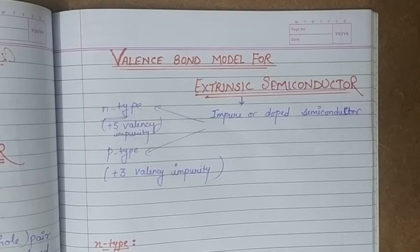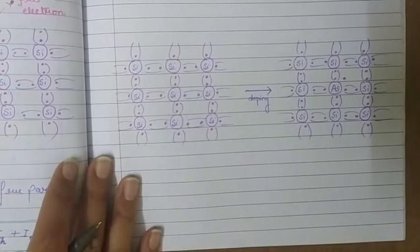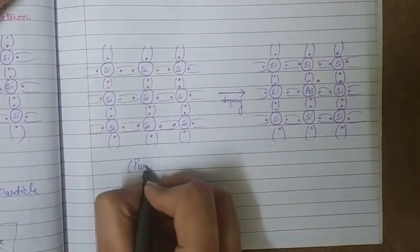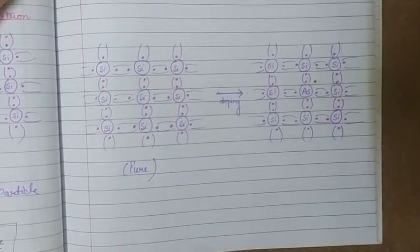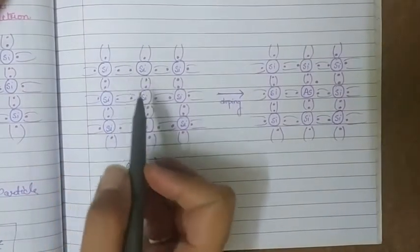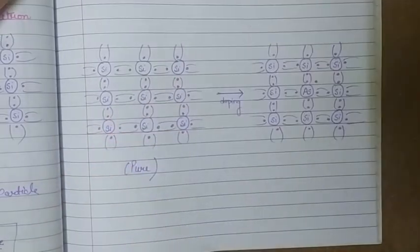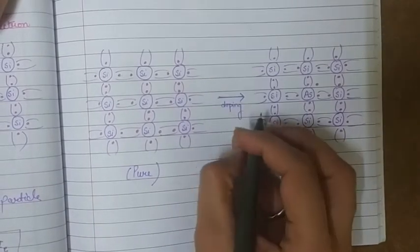Now we are going to discuss the valence bond model for extrinsic semiconductors. First, we will discuss the valence bond model for n-type. If you take the structure of pure silicon or pure germanium — that means a pure or intrinsic semiconductor — every silicon or germanium atom has four valence electrons which get shared with the nearby four silicon atoms to form four covalent bonds.